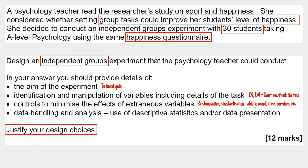You could talk about things like ability, mood, time, boredom — you can also talk about things like temperature in the room. There's loads of stuff that you could technically discuss when talking about extraneous variables.